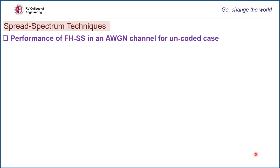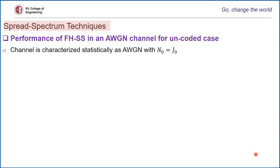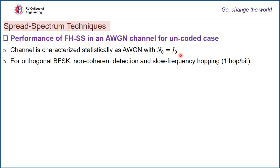First, we evaluate the FHSS system in an AWGN channel for the uncoded case. In an AWGN channel, the channel is characterized statistically by its power spectral density J0, where J0 is the power spectral density of a jamming signal. Considering orthogonal binary FSK modulation non-coherently detected at the receiver, and considering slow frequency hopping — meaning a single hop per bit — the probability of error is equivalent to that of a regular MFSK or BFSK signal in an AWGN channel.